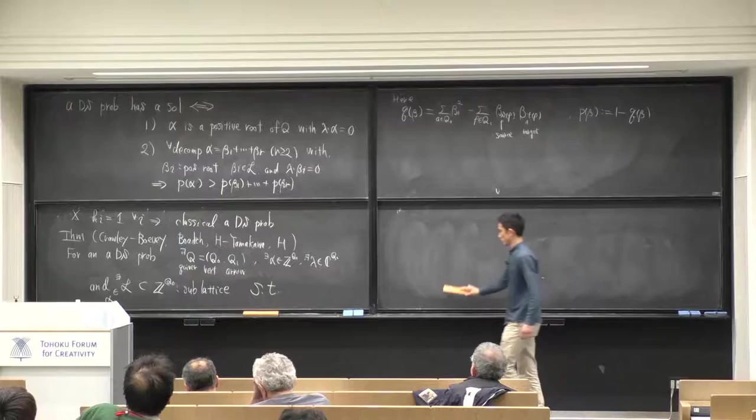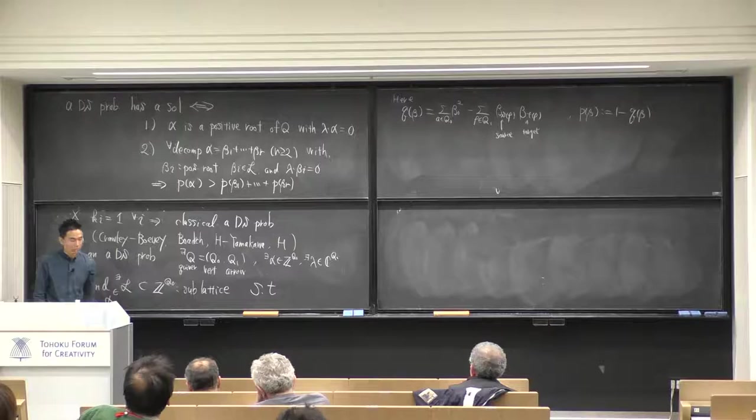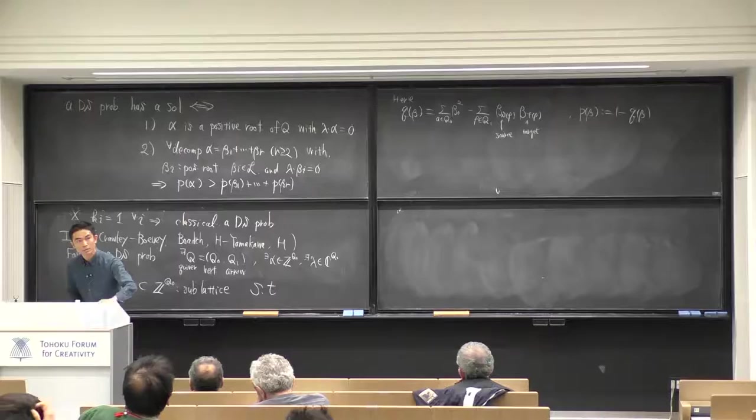Our task is a construction — how to construct a quiver from our de Rham-Simpson problem. Now we are talking about the irregular case. Crawley-Boevey considered the Fuchsian case and solved this problem there. In joint work with Daisuke, we could get analogous results.